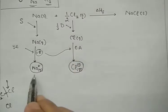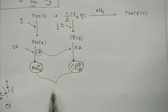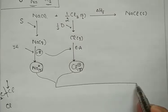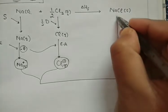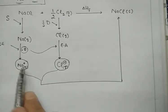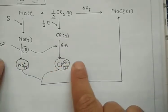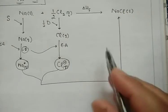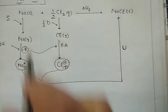Now the cation Na⁺ and the anion Cl⁻ join together in the gas state. We are bringing them from infinity to a certain distance where the ionic bond is formed. During the formation of this ionic bond, energy is released — that is called the lattice energy. This ultimately gives us sodium chloride — this is our Born-Haber Cycle.